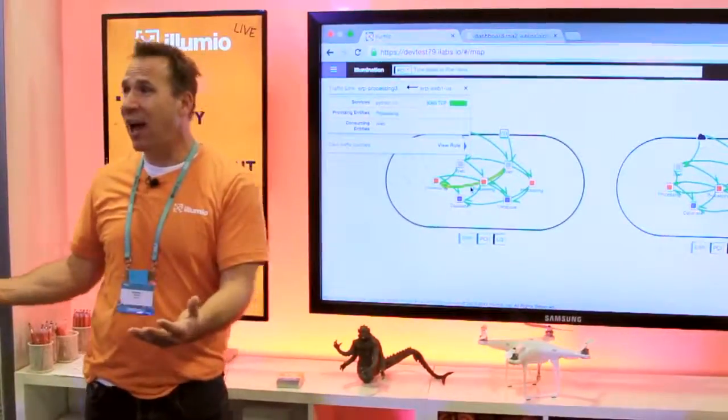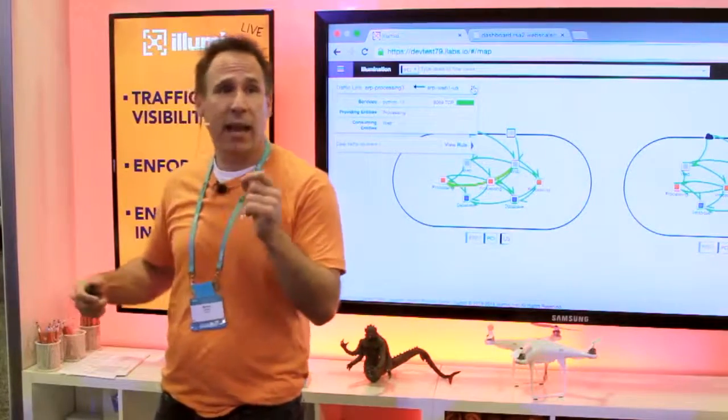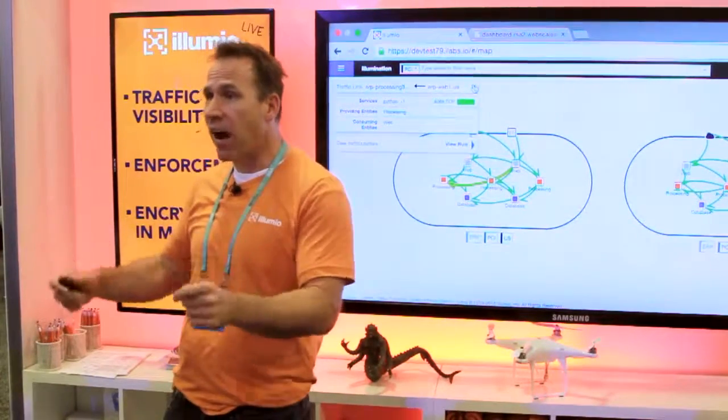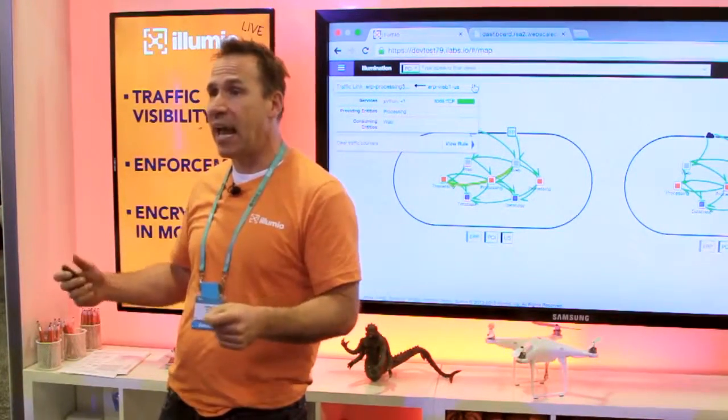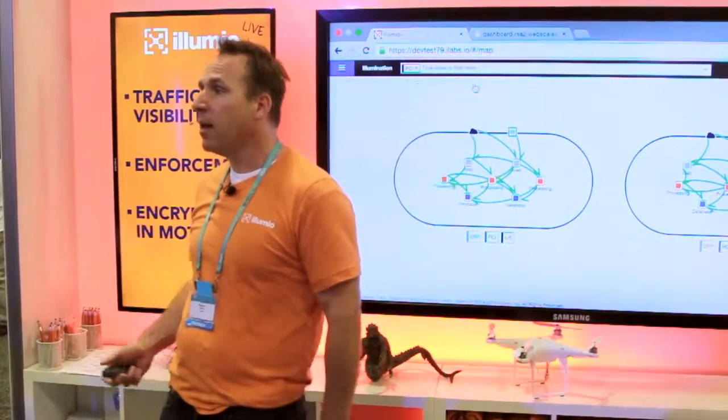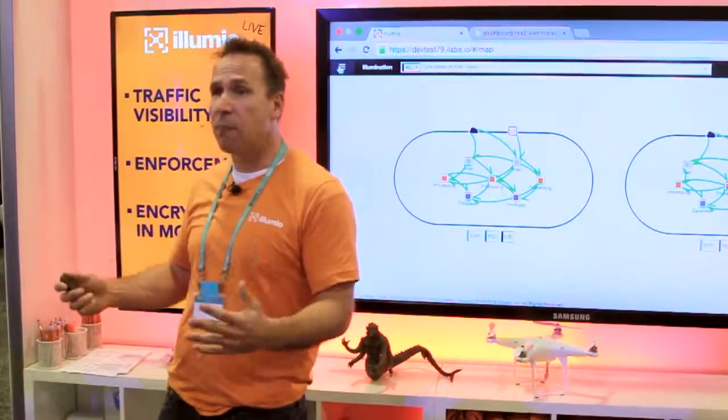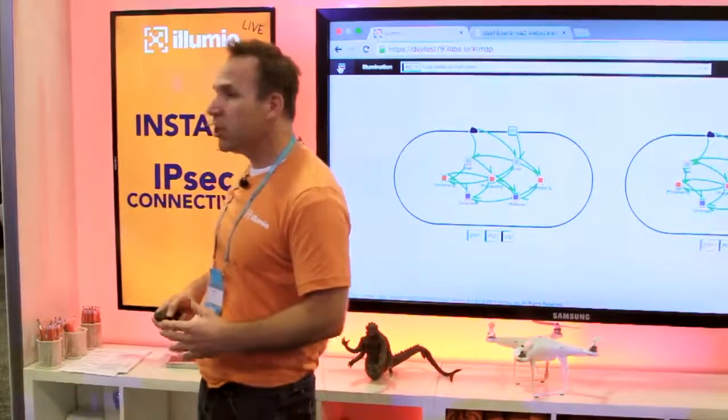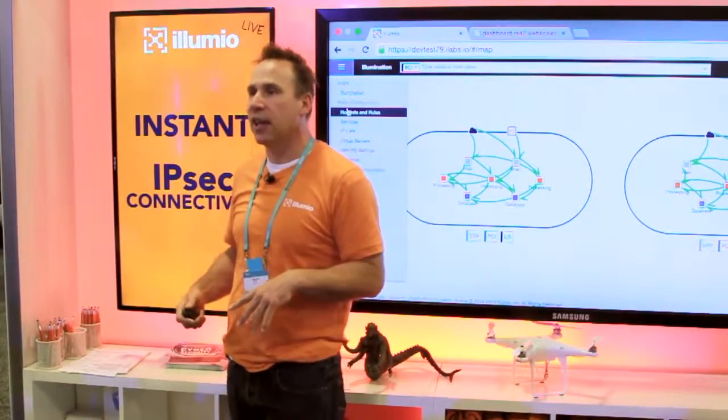Second thing, and I think we've shown you this a lot today, we are writing enforcement rules. We're writing firewall-based rules and we're doing it dynamically. We've shown you that already. The other thing which we could do, we could do automatically and dynamically, is we could do instant encryption on demand with one click. Let me show you how we do that.